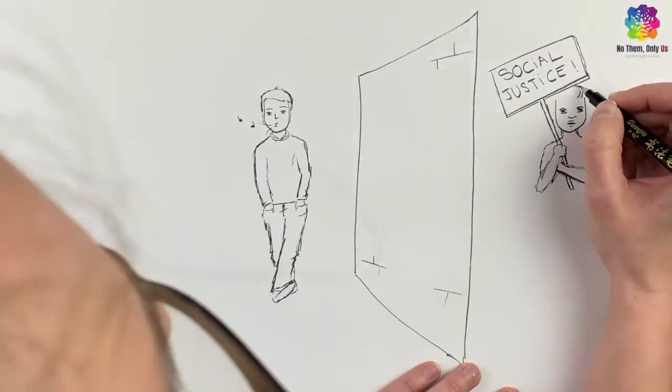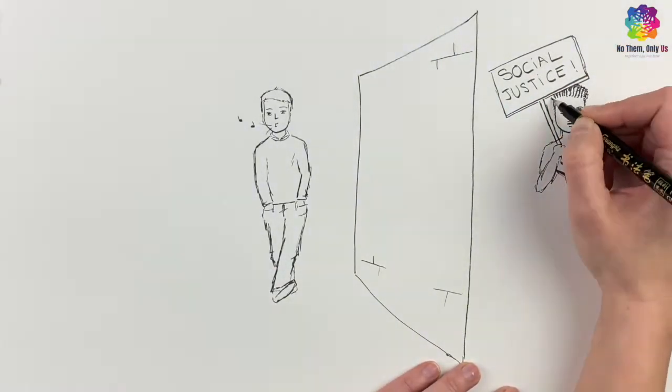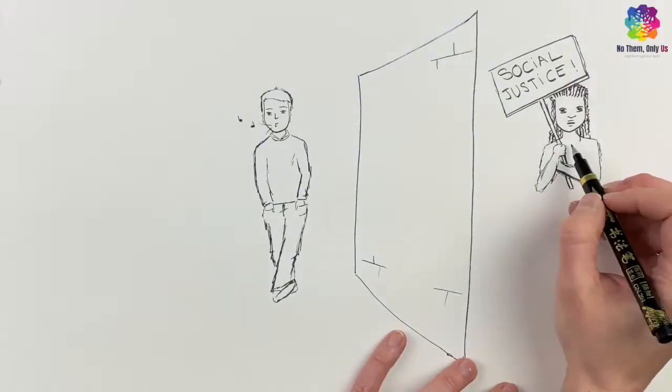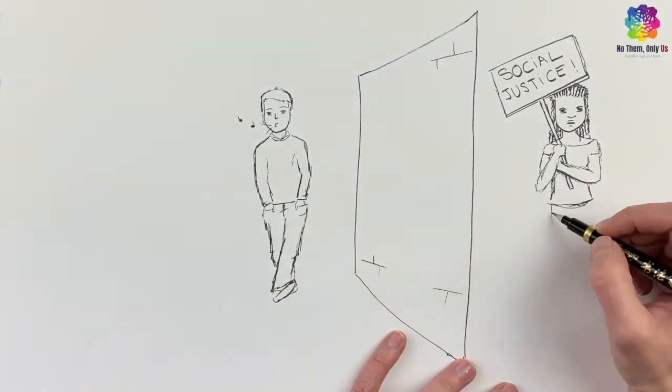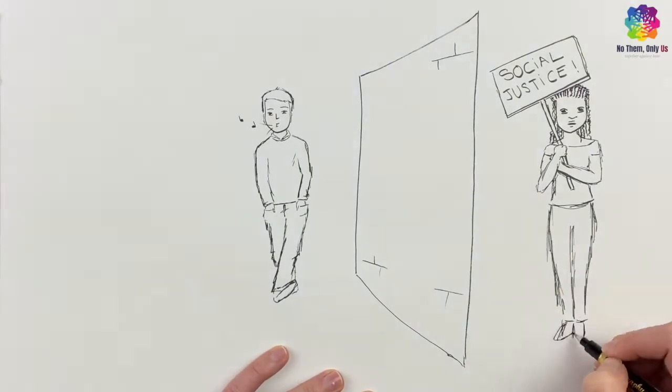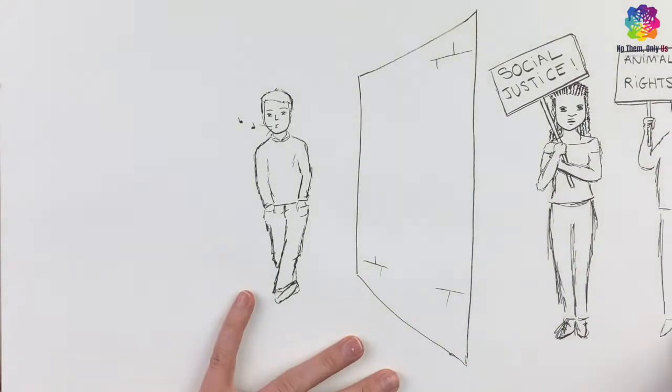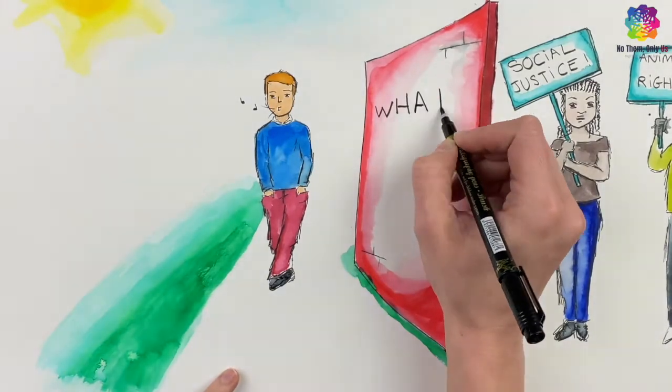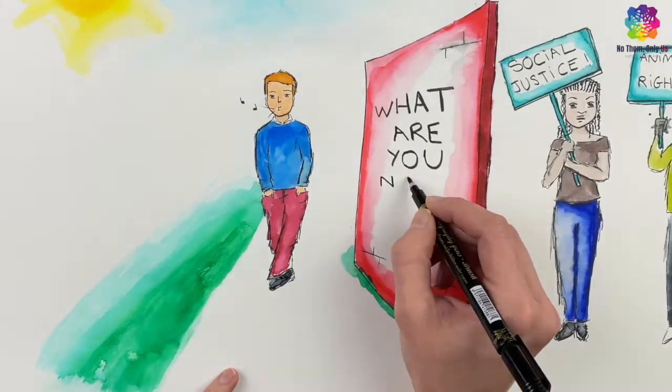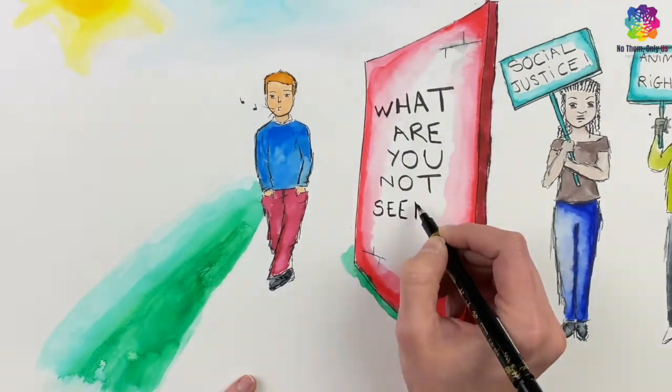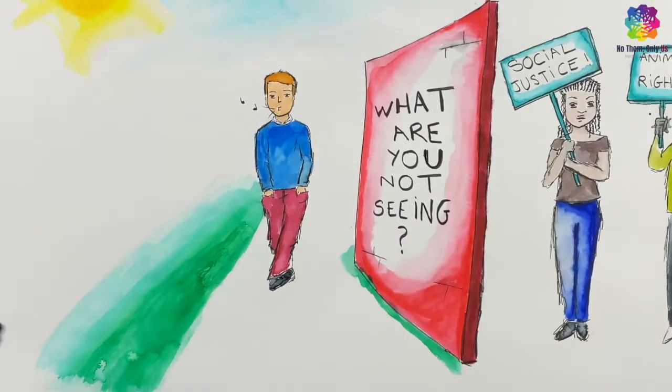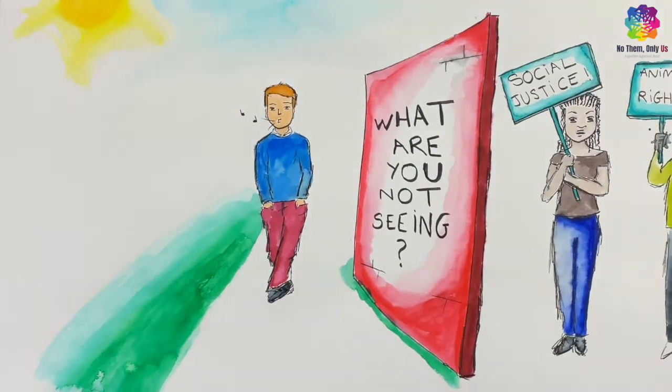If social media algorithms choose what to show us or not show us, how do we know what piece of information we're missing out on? Social media algorithms will block out posts with opinions you may not agree with, but also information about stuff you aren't particularly following. For instance, it may not show you updates about animal rights simply because you've never really shown an interest before. We become surrounded by only one perspective or point of view.